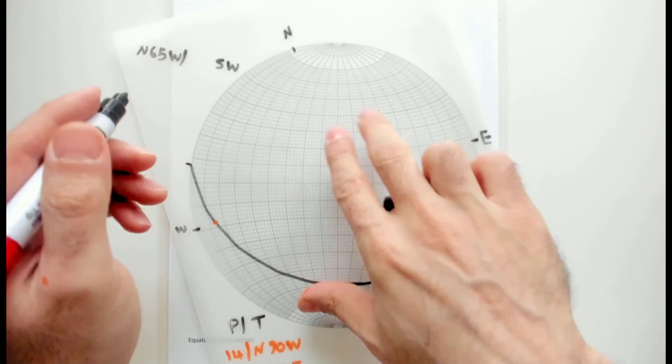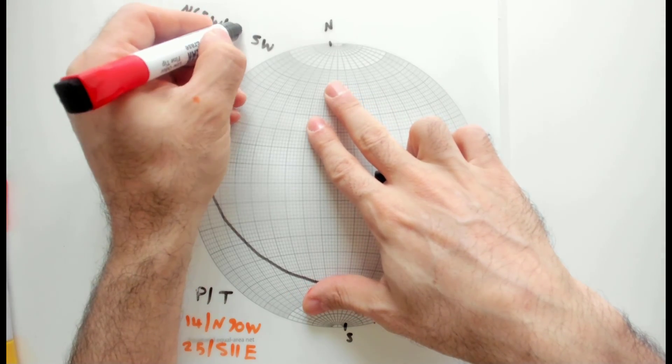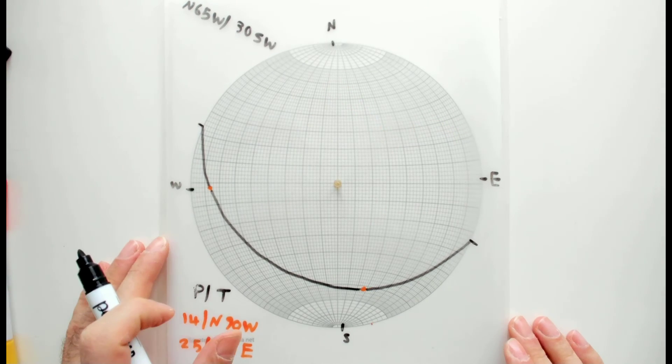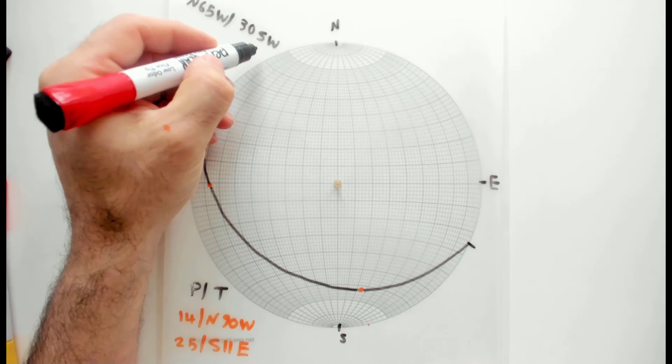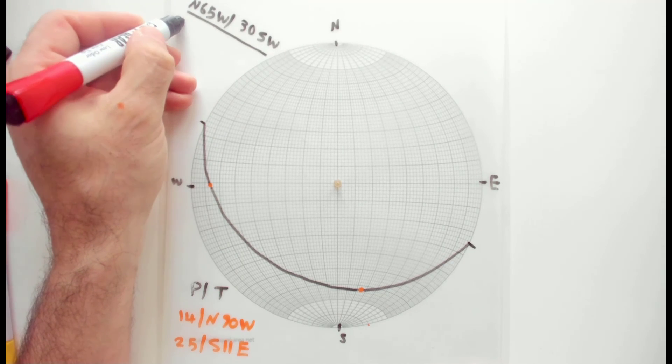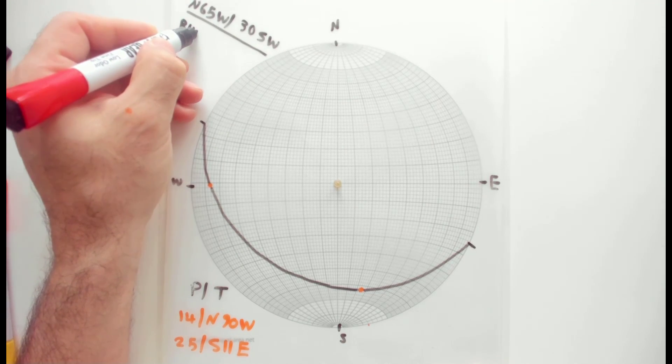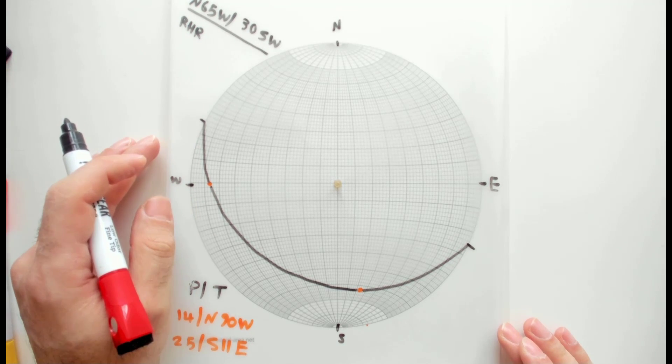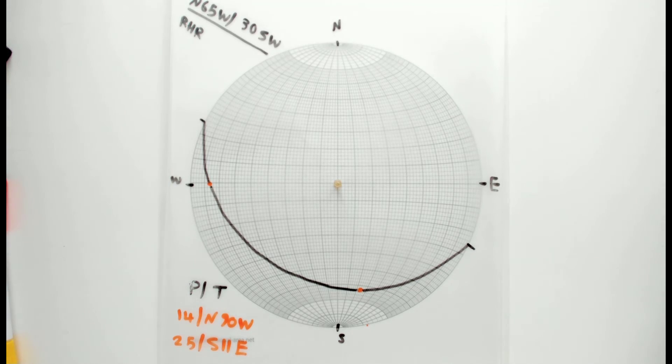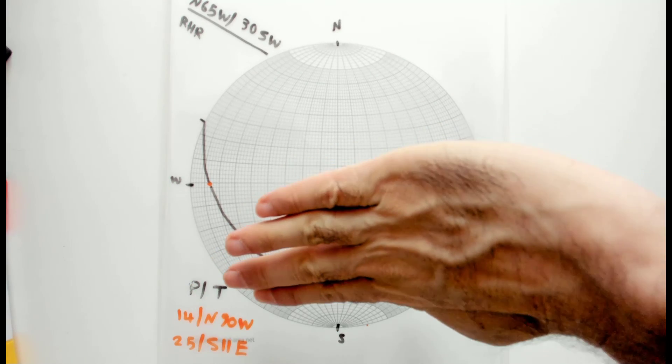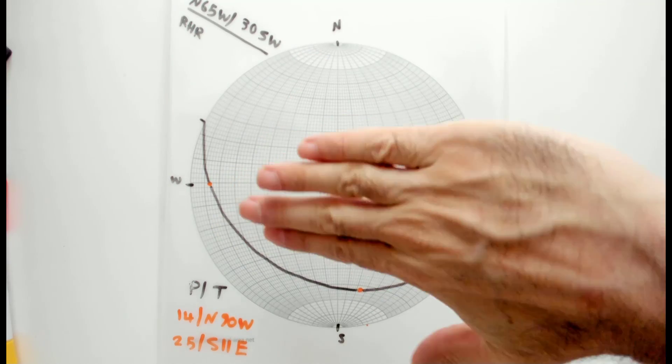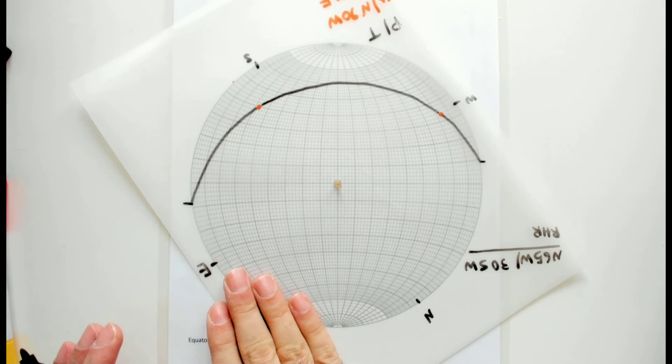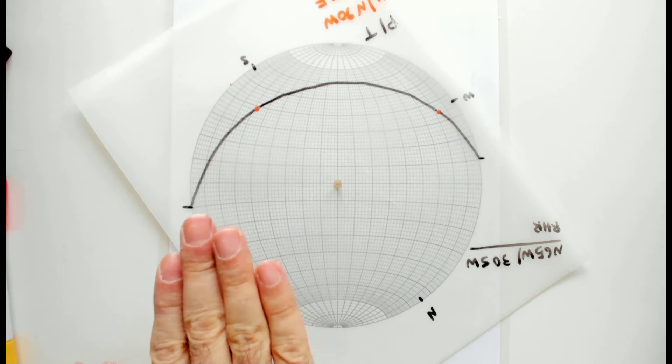Either you can write this, or if you want to do it in the right-hand rule, I think it might be easier for the future problems. What you do is put four fingers towards the dip direction. Four fingers parallel with the dip direction, and this end is the one that you should actually read if you are going to give the numbers in the right-hand rule.